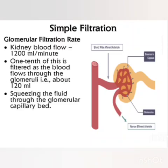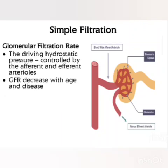Glomerular filtration rate (GFR): The kidneys receive a large amount of blood flow, approximately 1,200 ml per minute. One tenth of this is filtered as blood flows through the glomerulus, that is about 120 ml. The glomerular filtrate is formed by squeezing fluid through the glomerular capillary bed. The driving hydrostatic pressure — the pressure exerted by a liquid as a result of its potential energy — is controlled by the afferent and efferent arterioles. The glomerular filtration rate decreases with age and disease.